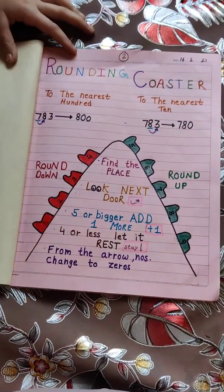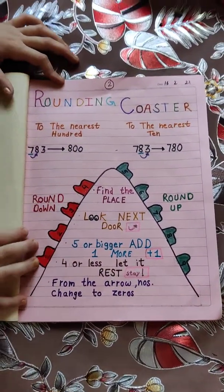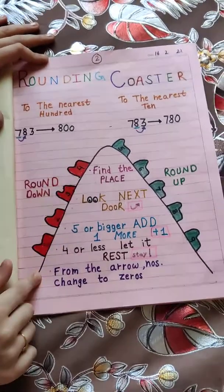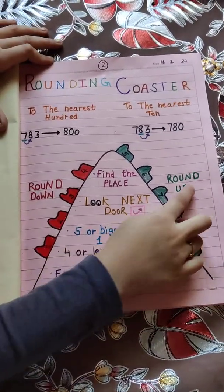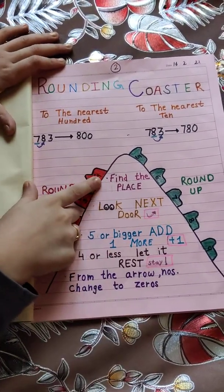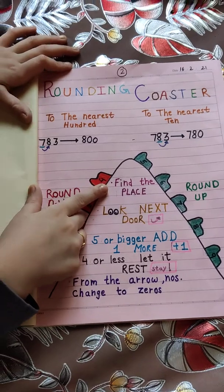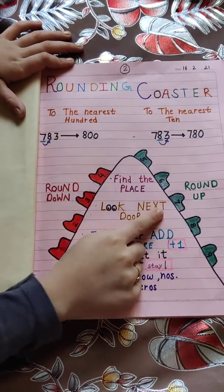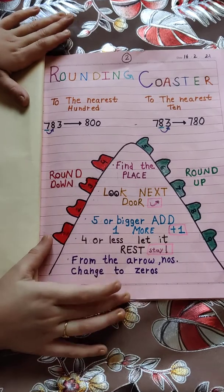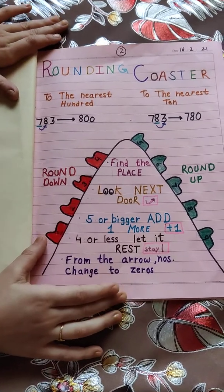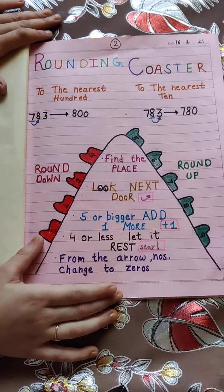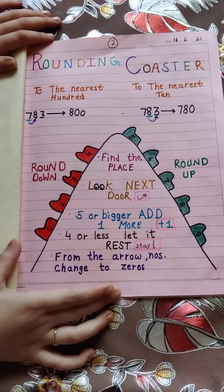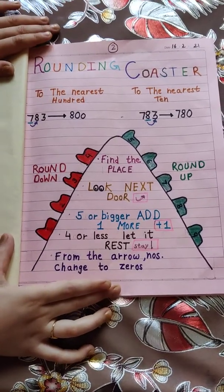My second topic is rounding coaster. For rounding down, we have four numbers. For rounding up, we have five numbers. The steps are: find the place, look next door — five or bigger, add one more; four or less, let it rest. From the arrow numbers, change to zero.